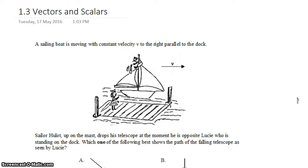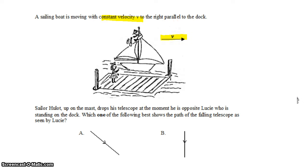In this case, what we have is a sailboat moving with a constant velocity, v, to the right, and parallel to a dock.